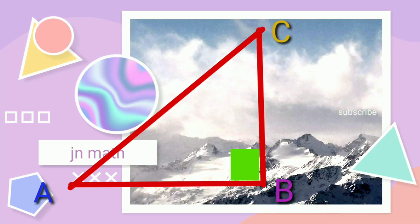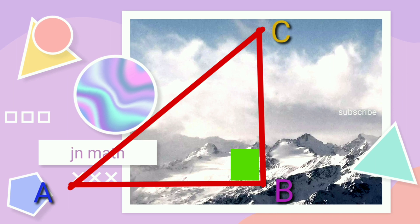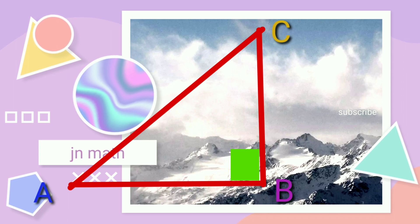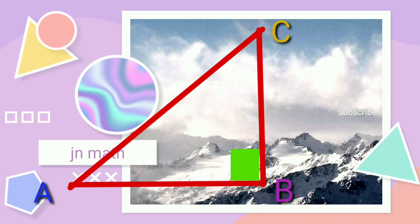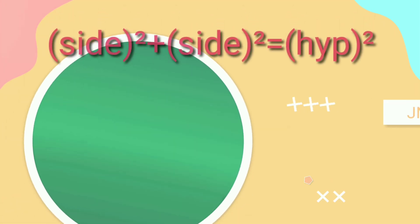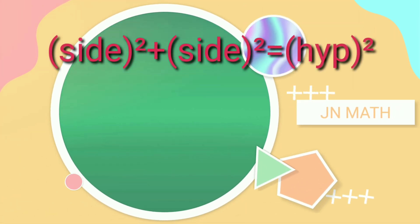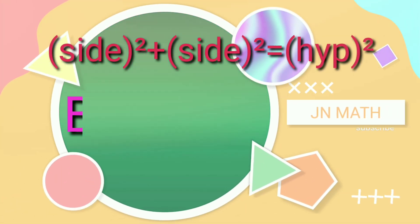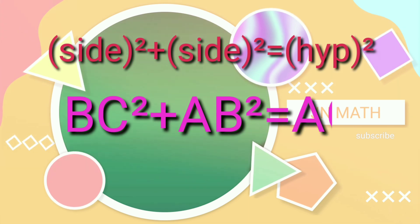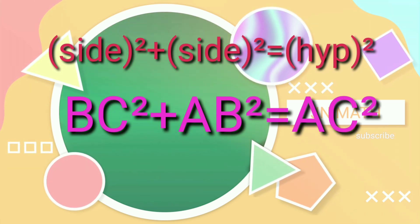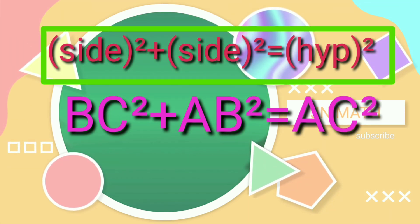Now, I'm going to use the Pythagoras theorem. You know, Pythagoras theorem is only applicable for a right-angled triangle. Using Pythagoras theorem, you can write BC squared plus AB squared is equals to AC squared — side squared plus side squared is equal to hypotenuse squared.